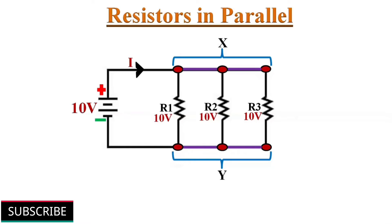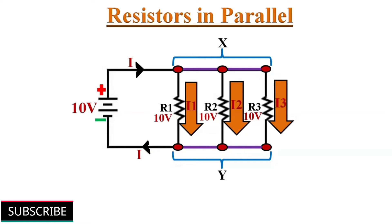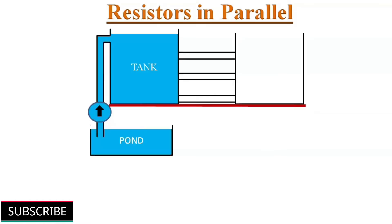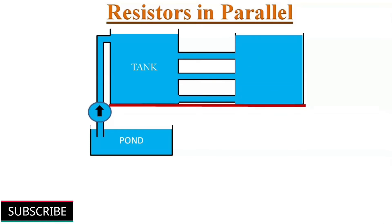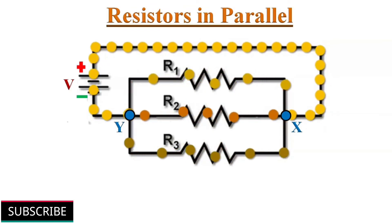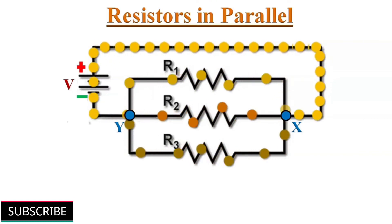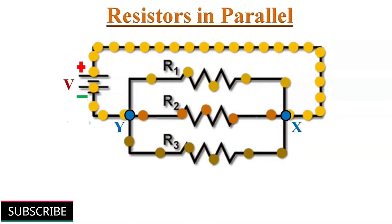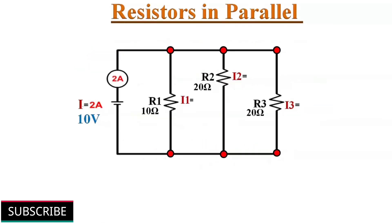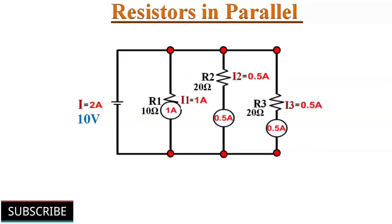The flow of current can take three paths, so the current will be divided into three paths. Currents I1, I2, and I3 pass through resistors R1, R2, and R3 respectively. Like water flowing from a filled tank through three pipes connected between them — the water flows through all three pipes but the rate of flow is different. So in a parallel combination, the current can take multiple paths. It branches out at the common starting point X and recombines at the common ending point Y. The current may not be the same through all branches — it depends on the resistance of that branch.